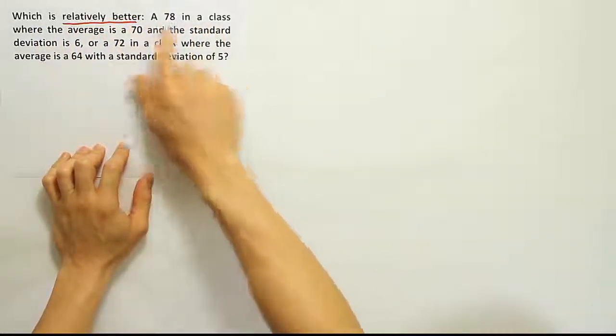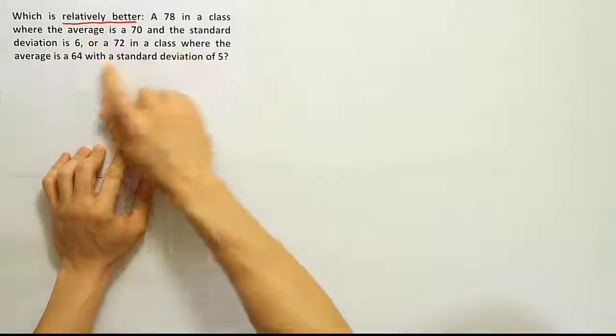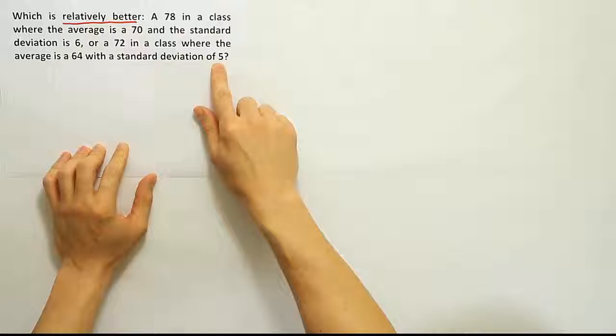Which is relatively better, a 78 in a class where the average is 70 and the standard deviation is 6, or a 72 in a class where the average is 64 with a standard deviation of 5?